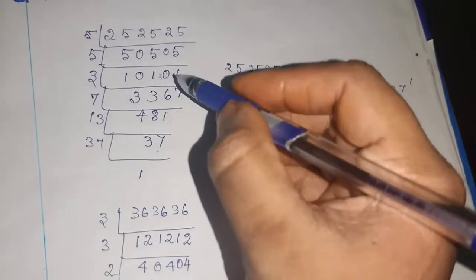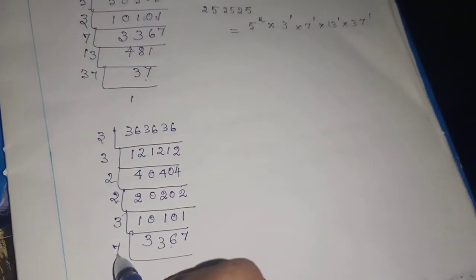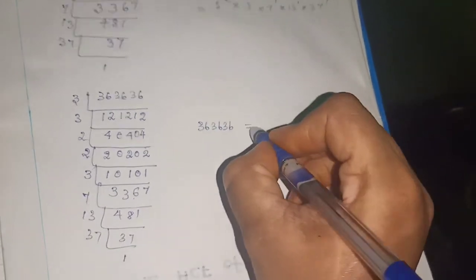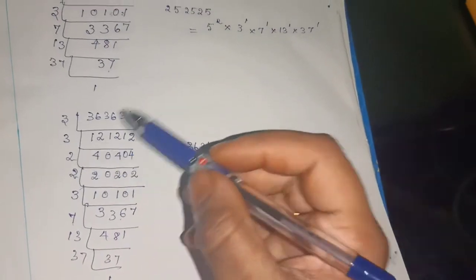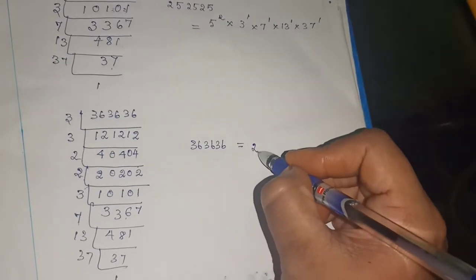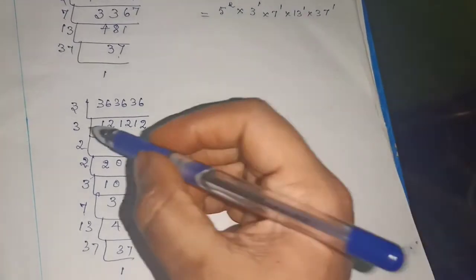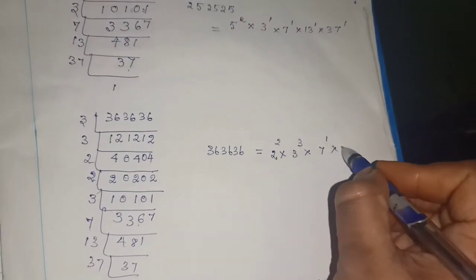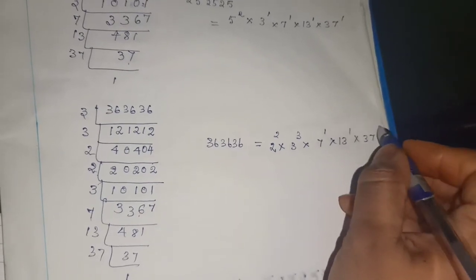Again, you can see this number - you have seen it here also, so you can apply the same steps. 7 fours are 28, so 81. Next, 13 table, then 37 ones are 37. Now, how will you write 363636? 2 twos, so 2 to the power 2 into how many 3s? Three 3s, so 3 to the power 3 into 7 to the power 1 into 13 to the power 1 into 37 to the power 1.